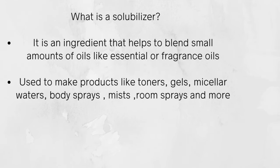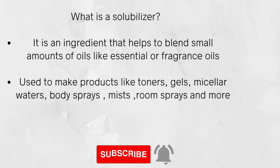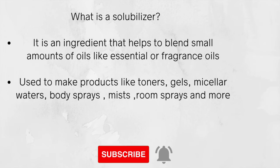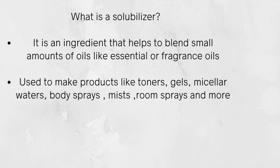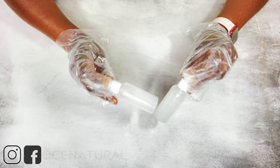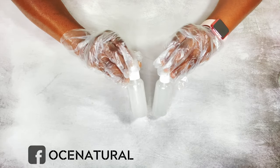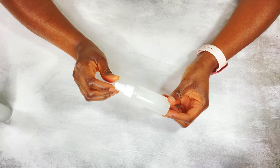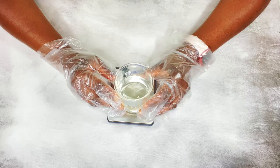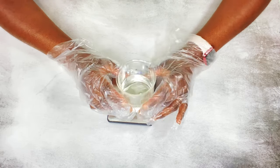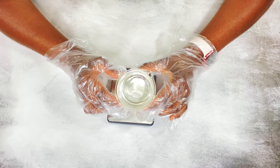So, what is a solubilizer? Basically, it's an ingredient that's going to help you blend small amounts of oils — like your essential oils or fragrance oils. An example would be if you made a fragrance mist or body mist and you wanted to combine your essential oils or fragrance oils in your water — you would need a solubilizer so that everything would blend right in.